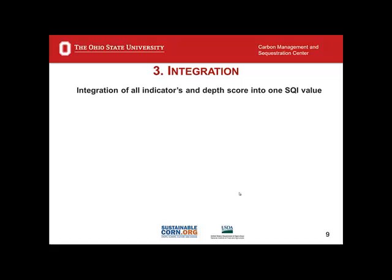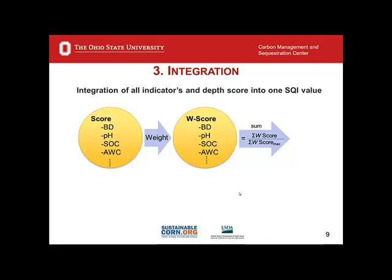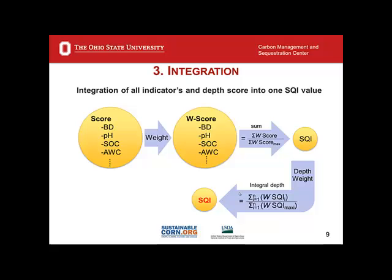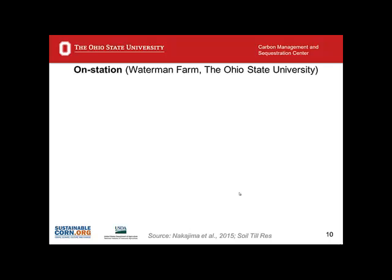The integration of all indicators uses a depth score function to calculate a value following a schematic: scoring of properties such as bulk density, pH, soil organic carbon, and available water capacity; getting the weighted scoring system for the same properties; and then summing these in relation to the maximum score — giving a ratio in the form of a soil quality index. We then develop a depth-weighted average and integrate across depth to get the overall soil quality index, which relates to economic productivity. This procedure has been developed and published in papers by Toru, Vincent, Atanu, Raj, and Richard.